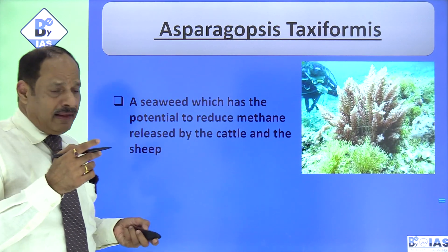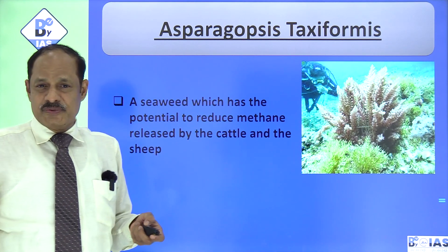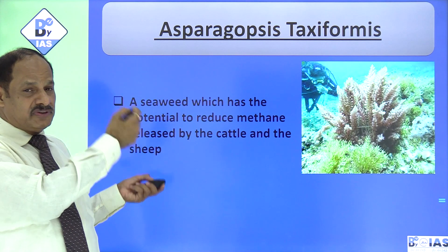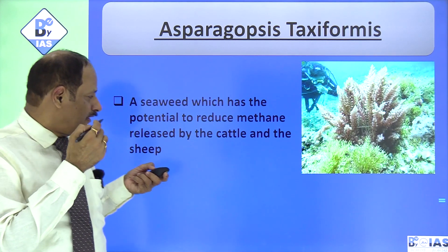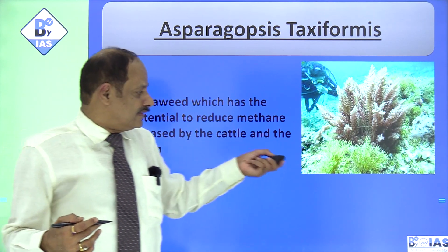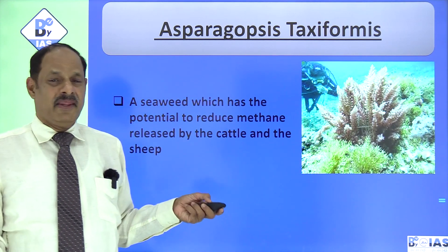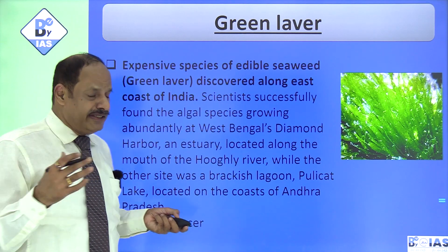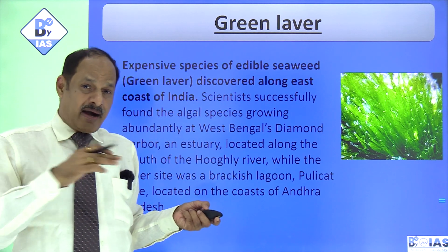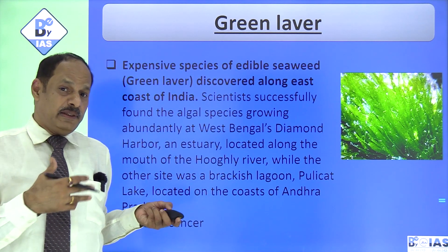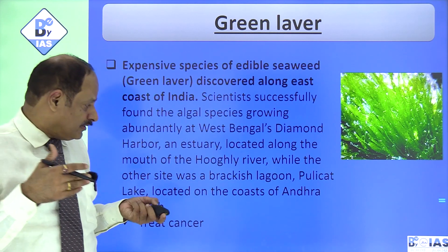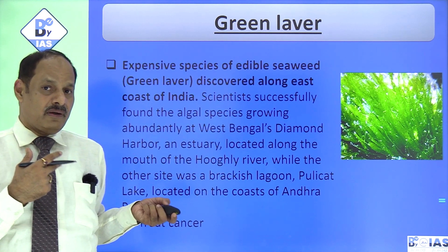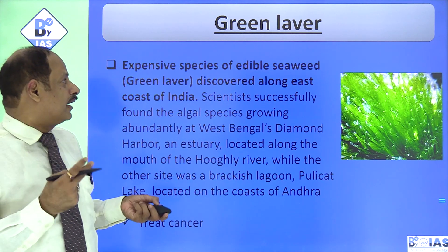There could be a question on Asparagopsis — a very important species because it can reduce the potential of methane emission from cattle. This species has also been in the news in the environment section of The Hindu and other newspapers. Green laver has also been seen — it is a very important seaweed. It was identified in Diamond Harbour on the banks of the Hooghly and also in Pulikat Lake in Andhra Pradesh. It has important medicinal properties, reportedly a good treatment for cancer, so kindly remember it is called green laver.